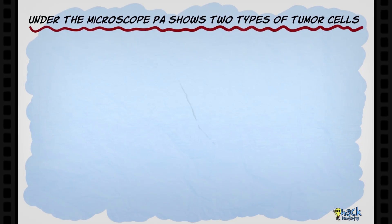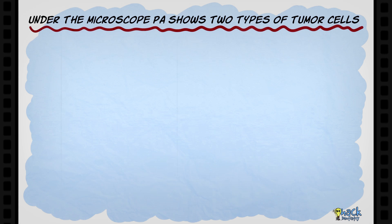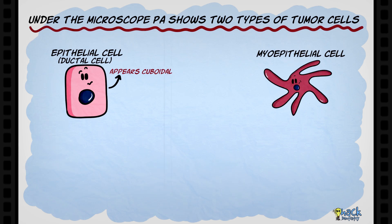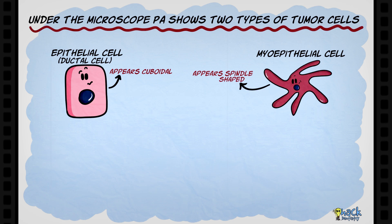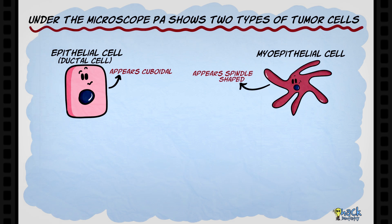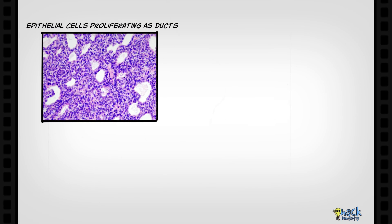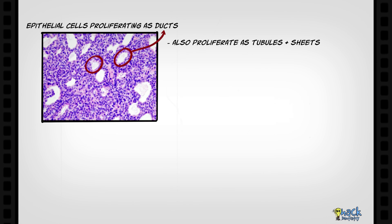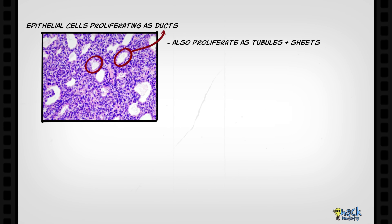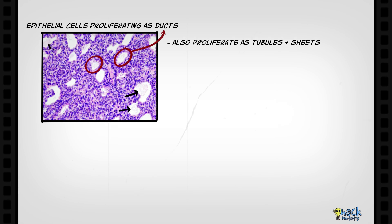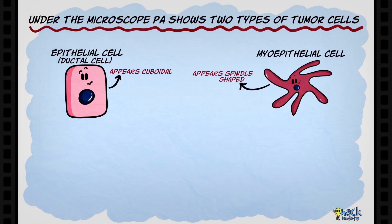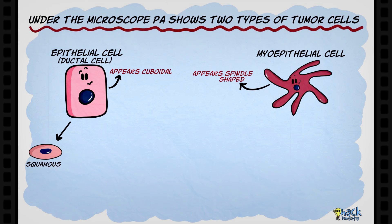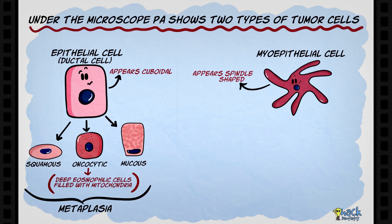Under the microscope, pleomorphic adenoma shows two kinds of tumor cells: the ductal epithelial cells and the myoepithelial cells. The ductal epithelial cells are cuboidal and usually proliferate in the form of ducts, tubules, or solid sheets. Eosinophilic secretions can be found in the duct lumen. The ductal cells may also show squamous, oncocytic, and mucous metaplasia.